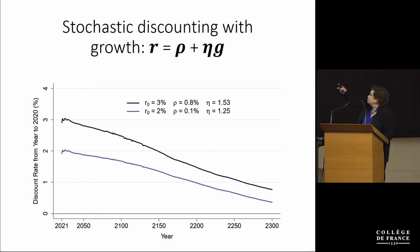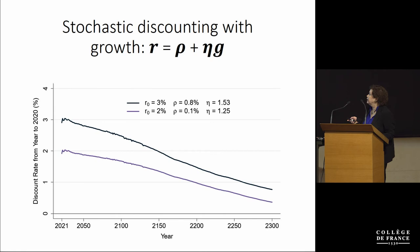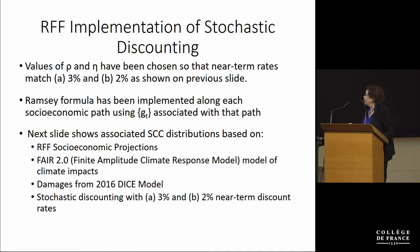The first line shows the certainty equivalent discount rate if rho is 0.8% and eta is 1.53. The second line shows it if rho is 0.1% and eta is 1.25. These paths match pretty well the work by Bauer and Rudebusch. The results use the socioeconomic projections shown earlier, round two of the FAIR model, the 2016 DICE damage model, and stochastic discounting using these two sets of parameters.